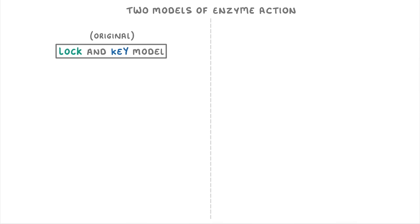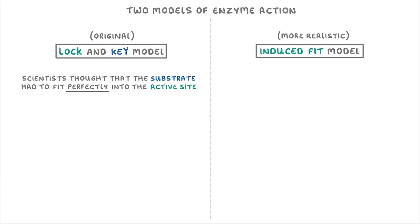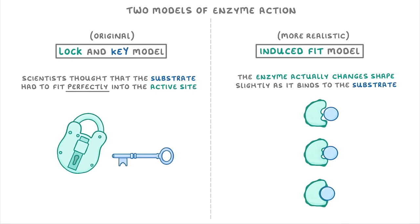The last thing we need to cover are the two models of enzyme action: the original lock and key model, and the more realistic induced fit model. At first, scientists thought that the substrate had to fit perfectly into the active site, just like how a key fits perfectly into a lock — hence the name lock and key model. However, we now know that the enzyme actually changes shape slightly as it binds to the substrate, so that they can fit together more perfectly. In exams, you want to describe this by saying that the active site is complementary to the substrate. You can think of the induced fit model kind of like putting your hand into a rubber glove — the glove wasn't a perfect fit to start with, but when you put your hand in, it moulds around your hand and becomes a perfect fit.